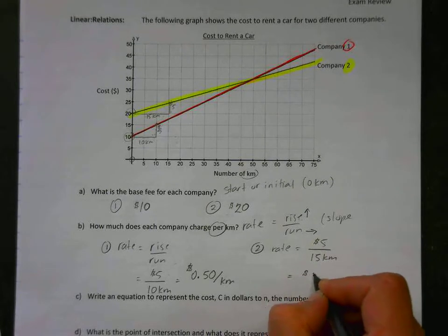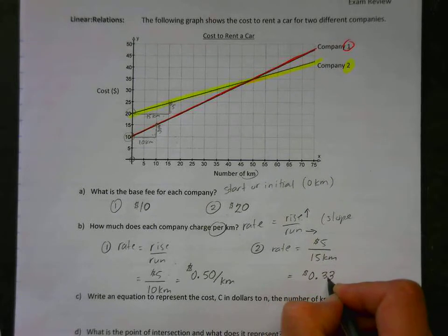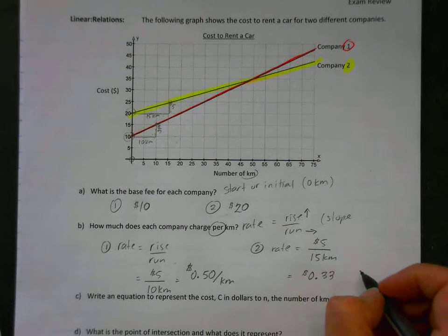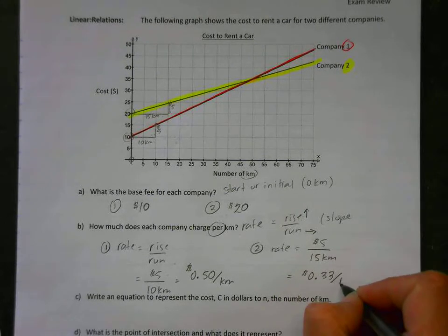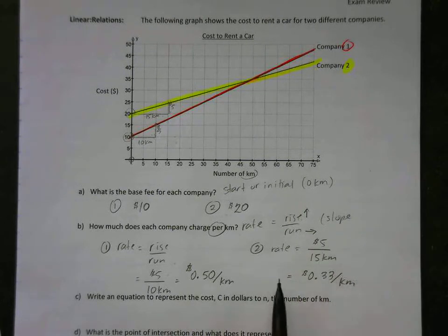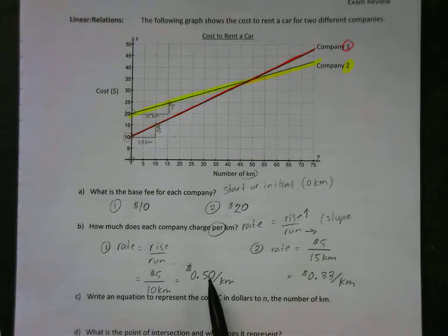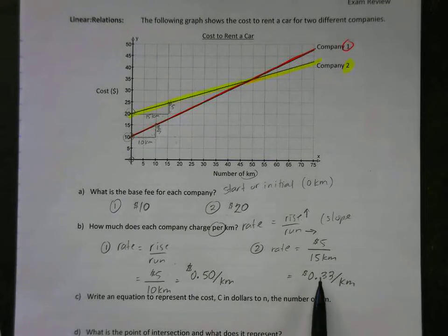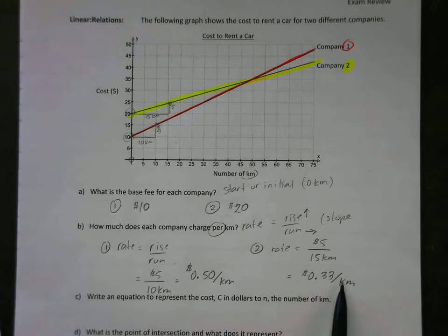And that's going to be 0.33 repeated over and over and over again, and that is per kilometer. So if I wanted to put this into a sentence, company number one's rate is fifty cents per kilometer, or half a dollar per kilometer, and company two has a lower rate at thirty-three cents or 0.33 dollars per kilometer.